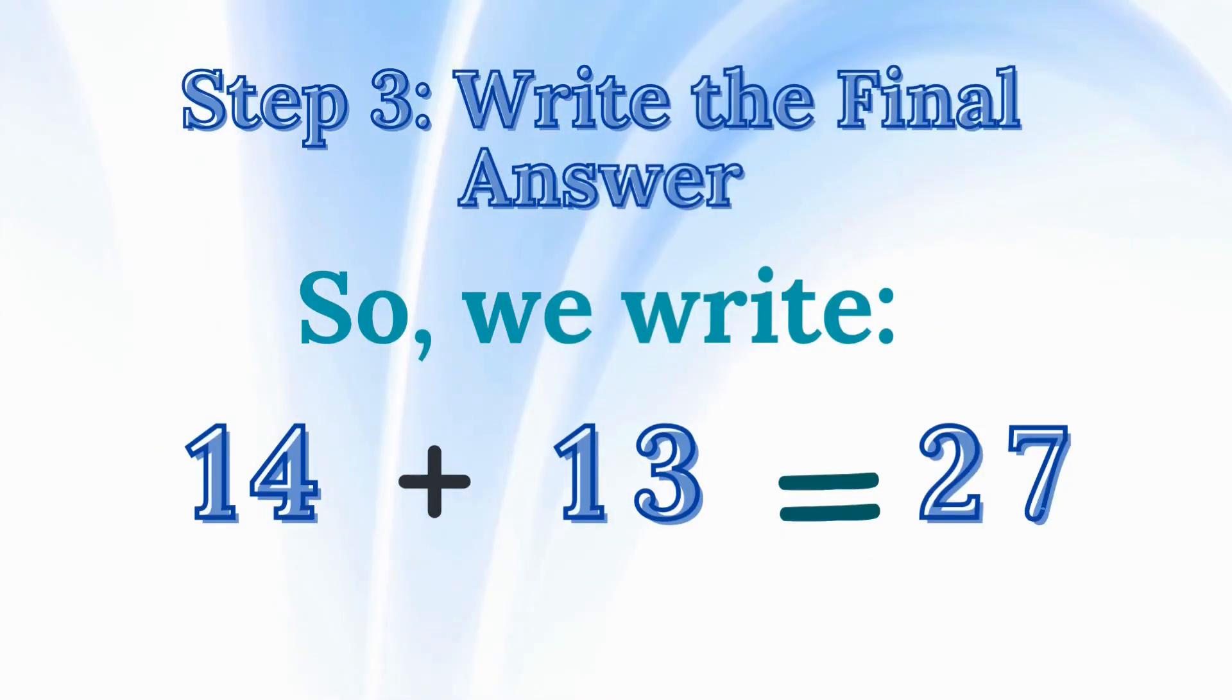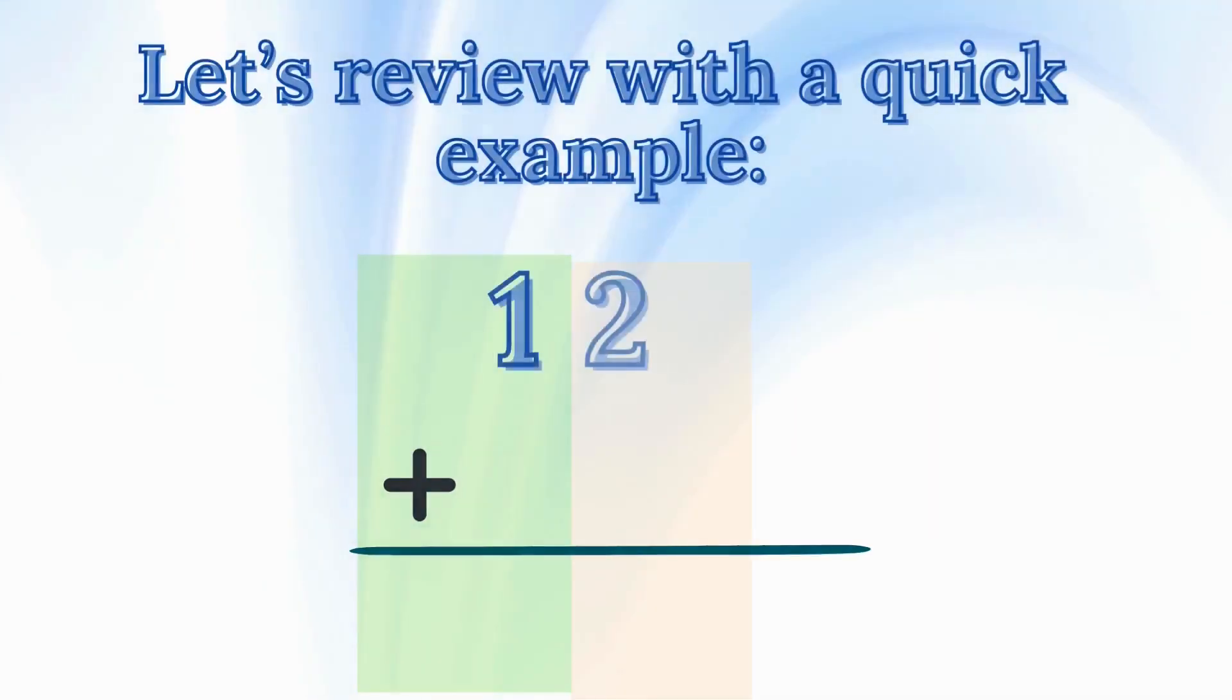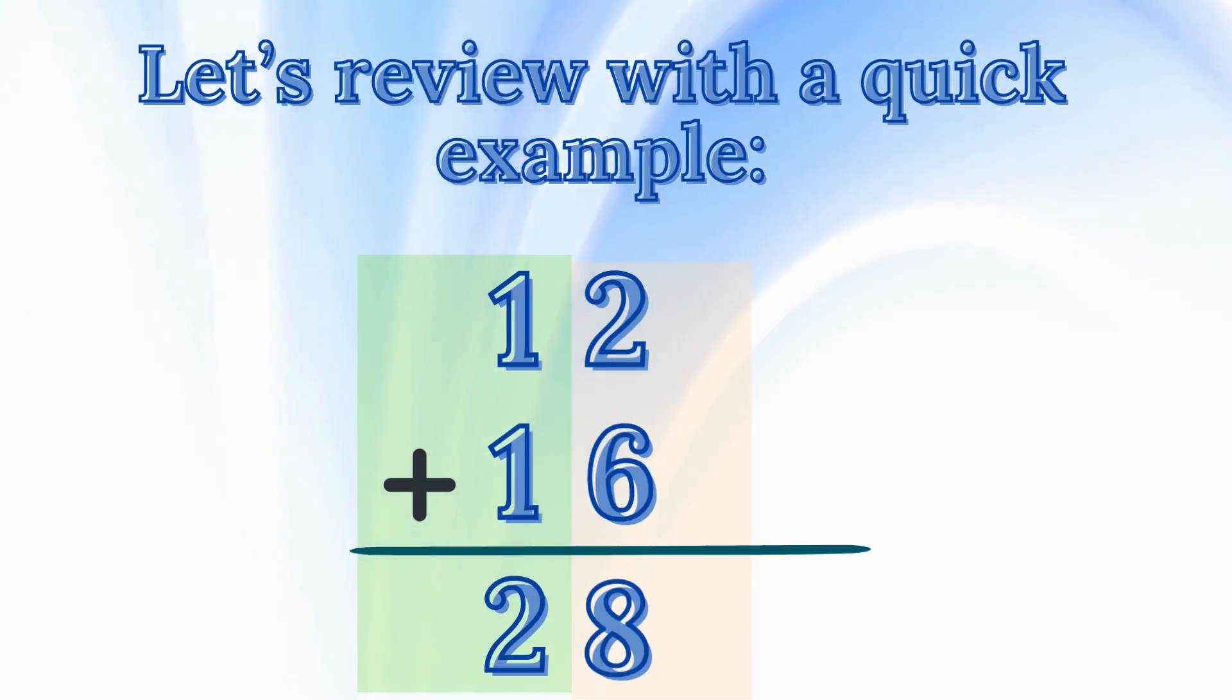Step 3: Write the final answer. Now, we have 2 in the 10s place and 7 in the 1s place. So, 14 plus 13 equals 27. Let's review with a quick example: 12 plus 16 equals 28. Well done!